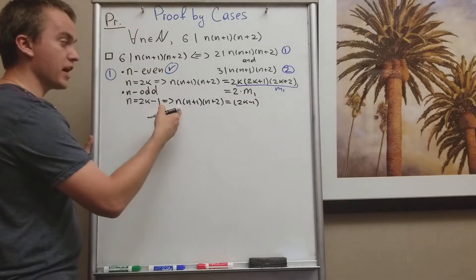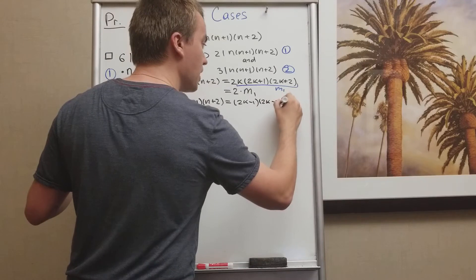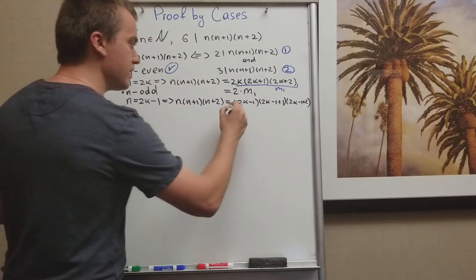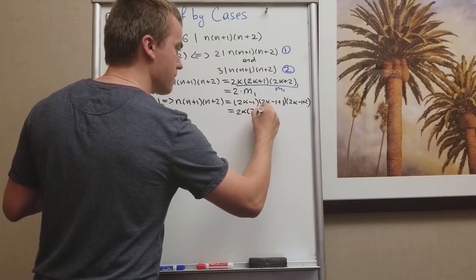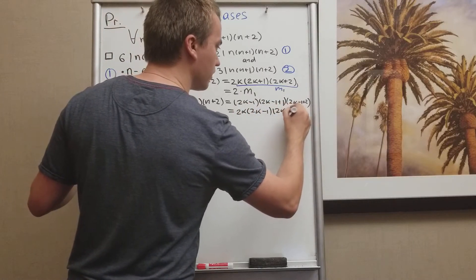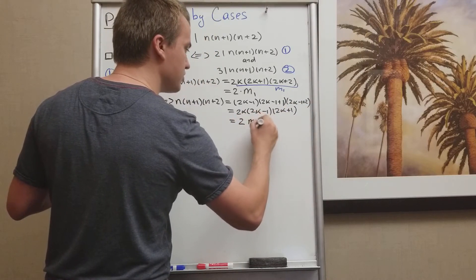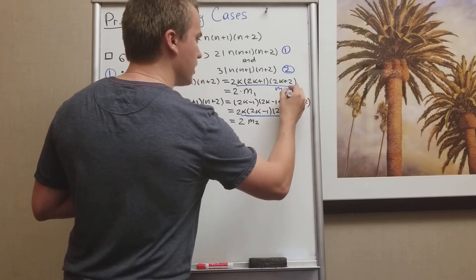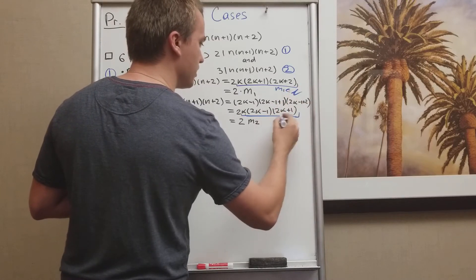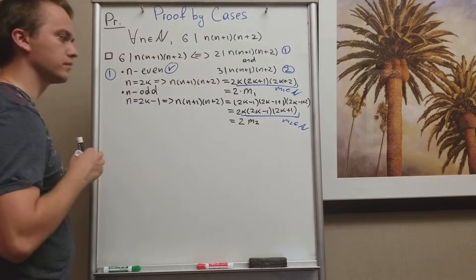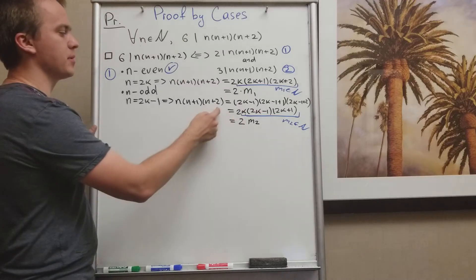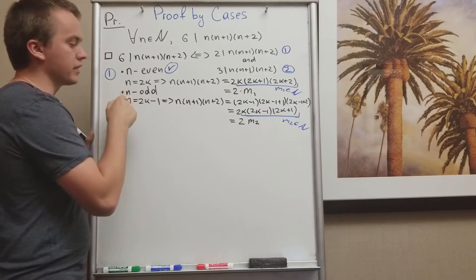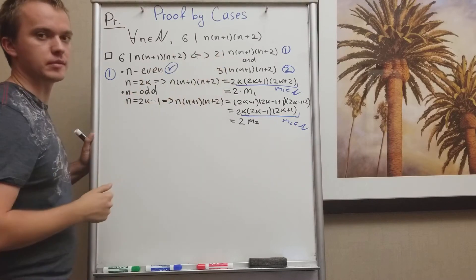For the second term I have 2k minus 1 plus 1, which gives 2k. For the third term, 2k minus 1 plus 2, which gives 2k plus 1. So the product includes a factor of 2k, and I can write it as 2 times m2, where m2 is an integer. So for n odd, the product is also divisible by 2. Since both cases are covered, the whole thing is divisible by 2.